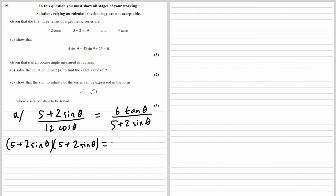6 times 12 will be 72, and cos theta times tan theta: since tan is sine over cos, it's sine theta divided by cos theta times cos theta — they cancel out. So cos theta times tan theta is just sine theta.